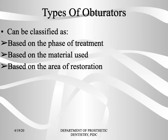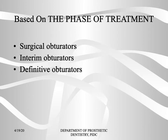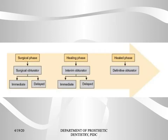Types of obturators can be classified based on the phase of treatment, the material used, and the area of restoration. Based on the phase of treatment, obturators are classified as surgical obturators, interim obturators, and definitive obturators. Surgical obturators are given during the surgical phase, immediately after the surgical procedure. The interim obturator is given during the healing phase, and the definitive obturator is given during the healed phase, when no more tissue changes are expected.